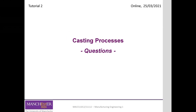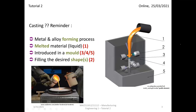This tutorial is on casting processes. The tutorial questions were uploaded on the Blackboard page — some of you may have already attempted answering them — and we will go through them explicitly, as we did for Tutorial One. As a reminder, metal casting is a manufacturing process which involves melting the material and then pouring it into a mold.